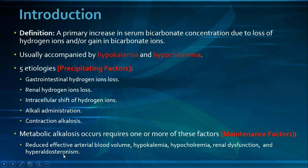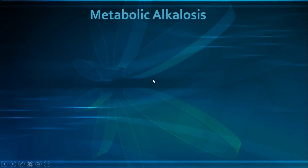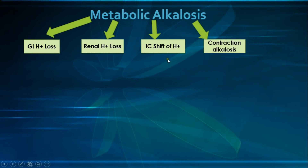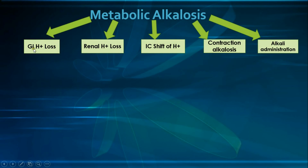Hyperaldosteronism results in both hypokalemia and increased hydrogen ion excretion in the kidneys. Now let's look at the precipitating factors in more detail, starting with GI hydrogen ion loss, then renal hydrogen ion loss, intracellular shift of hydrogen ions, contraction alkalosis, and ending with alkali administration.